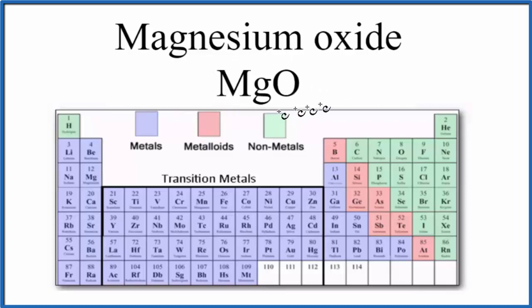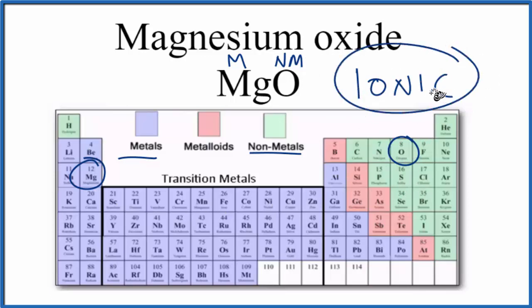Let's take a look at the periodic table. Here we have magnesium, which is a metal, and then oxygen, right here, is a non-metal. So when we have a metal plus a non-metal, almost always that's going to be an ionic bond. So according to the periodic table here, magnesium oxide, that's an ionic bond.